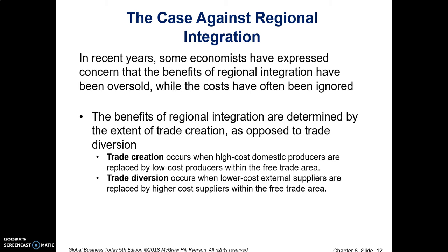It's not good for the domestic producers, but it does create trade. Trade diversion occurs when low-cost external suppliers are replaced by higher-cost suppliers within the free trade area. Before, you would have suppliers outside of your country supplying you products — low-cost external suppliers — but now you sign that agreement and it does not include them in your trade block. You are forced to trade with suppliers from within that free trade area, and if they are higher cost, there's going to be less trade. That is the concept of trade diversion.